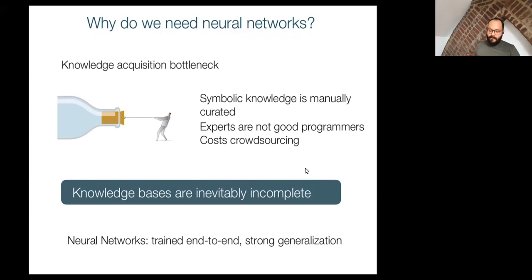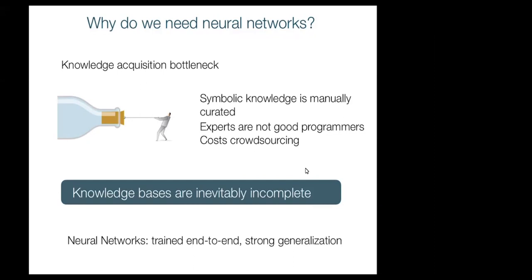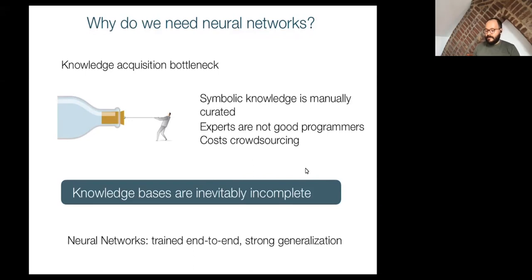We have to accept that knowledge bases are inevitably incomplete. On the other hand, neural networks are trained end-to-end, so there is no real need for humans to participate much. You give the data and the network does everything, and neural networks also have strong generalization capabilities. This is one of the reasons why we believe we need neural networks.